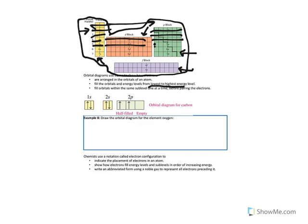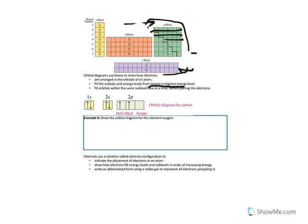Let's try carbon. Where does carbon fall on this diagram? If you look at your periodic table, you will see that carbon falls here in the second of the 2p's. So the way that we fill carbon is we fill the 1s first, and there are 2 electrons that go in the 1s. In the orbital diagram, we write 1s, then we draw a box. Inside that 1s there are 2 electrons — one up, one down.